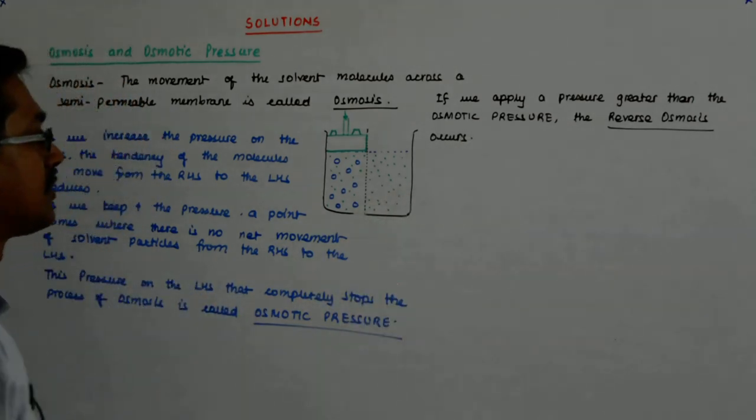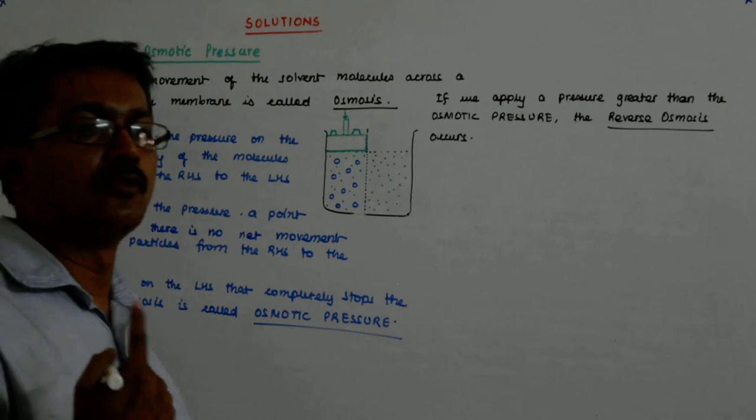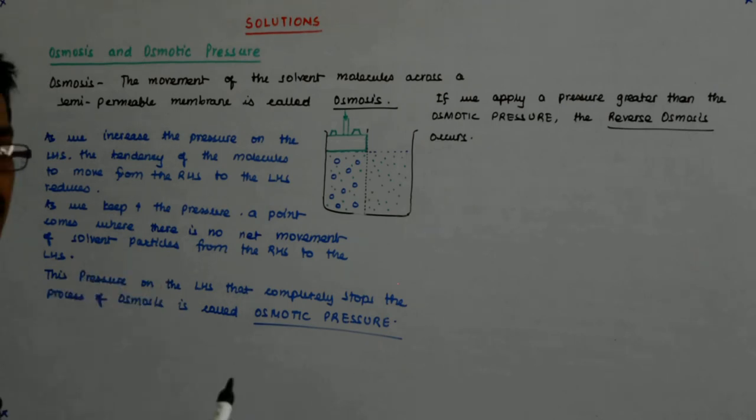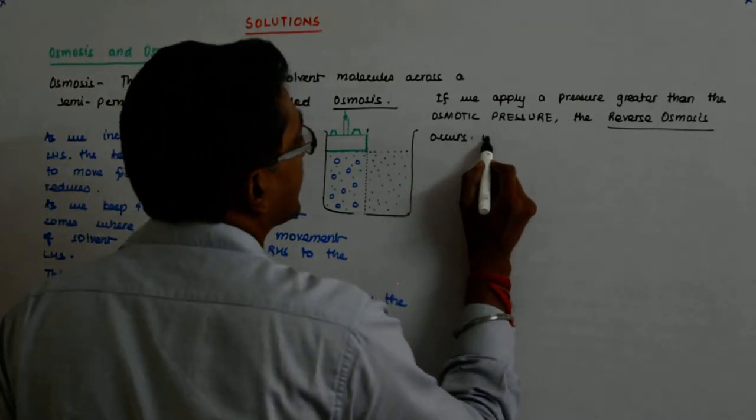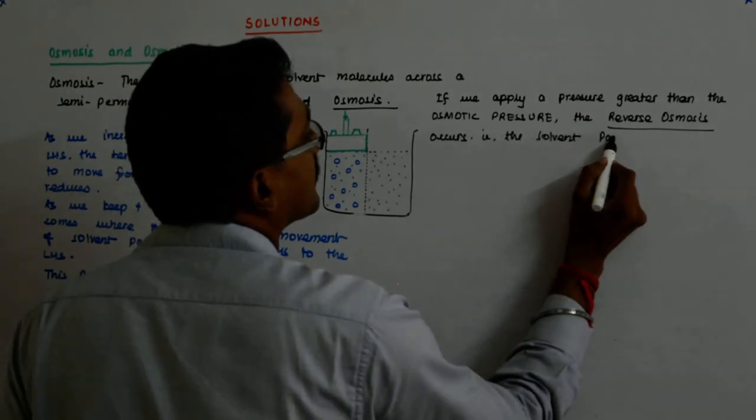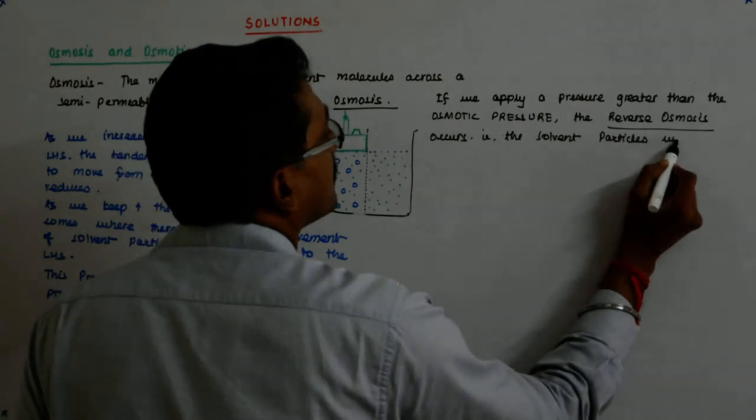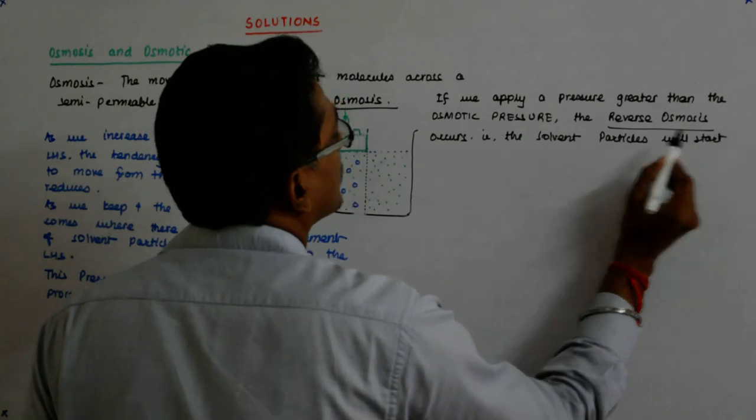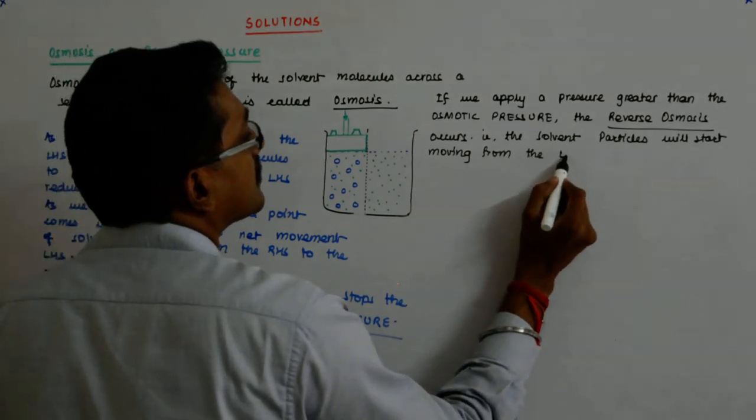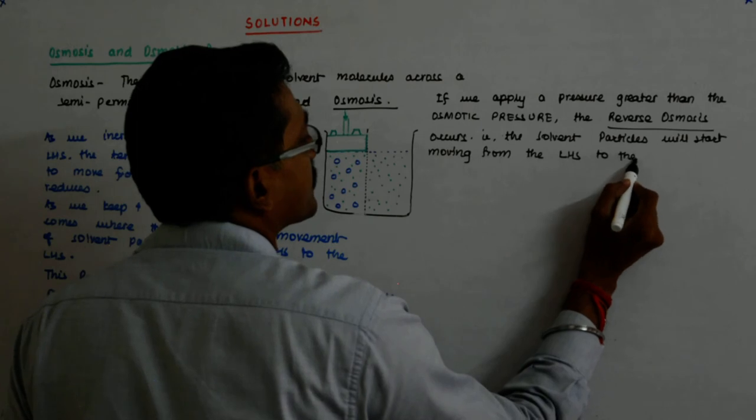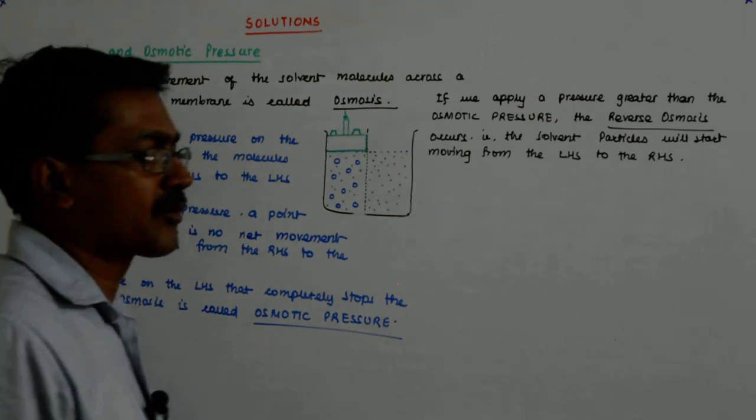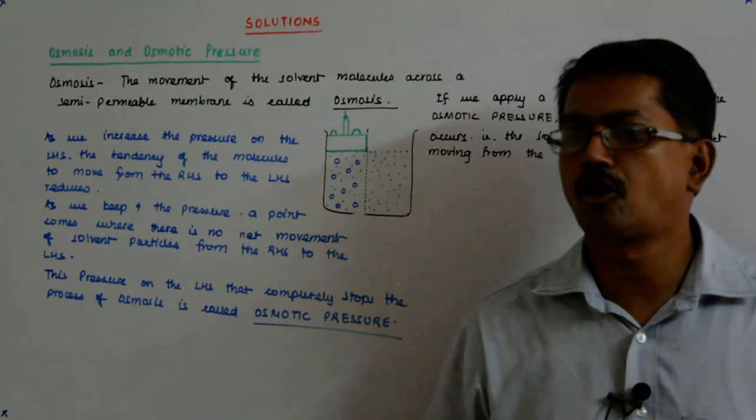So, what happens? The movement of solvent particles which otherwise was expected from the RHS to the LHS will start from LHS to the RHS. That is, the solvent particles will start moving from the LHS to the RHS, which is against what we normally expect. And that is why it is called reverse osmosis.